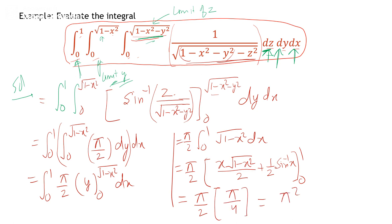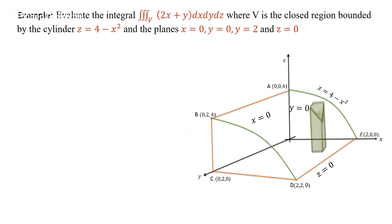Applying the limit from 0 to 1, with π/2 outside, we get π/2 · (π/4) = π²/8. So the value of the second integral is π²/8.